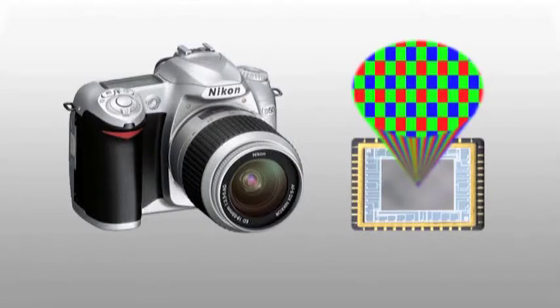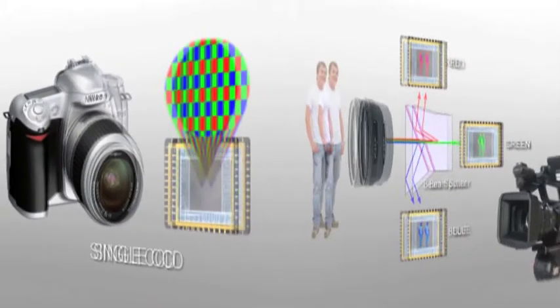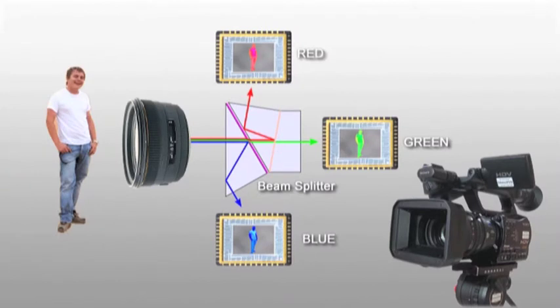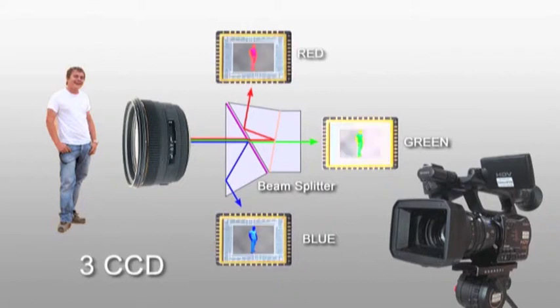It's worth noting that unlike stills cameras which generally use only one imaging target, many professional video cameras use a prism to split the image into the three primary colours used to create the television picture: red, blue and green.